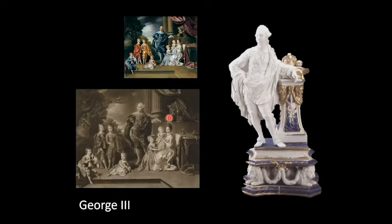One of the major events of George the Third's reign was the American Declaration of Independence from British rule in 1776, which established the United States of America as an independent country under its own president.